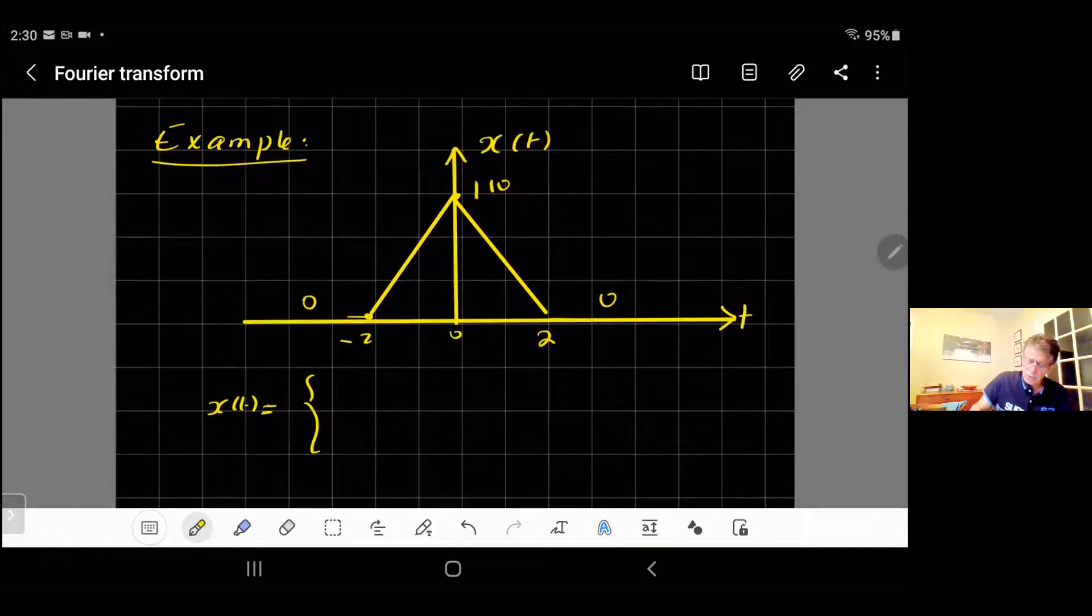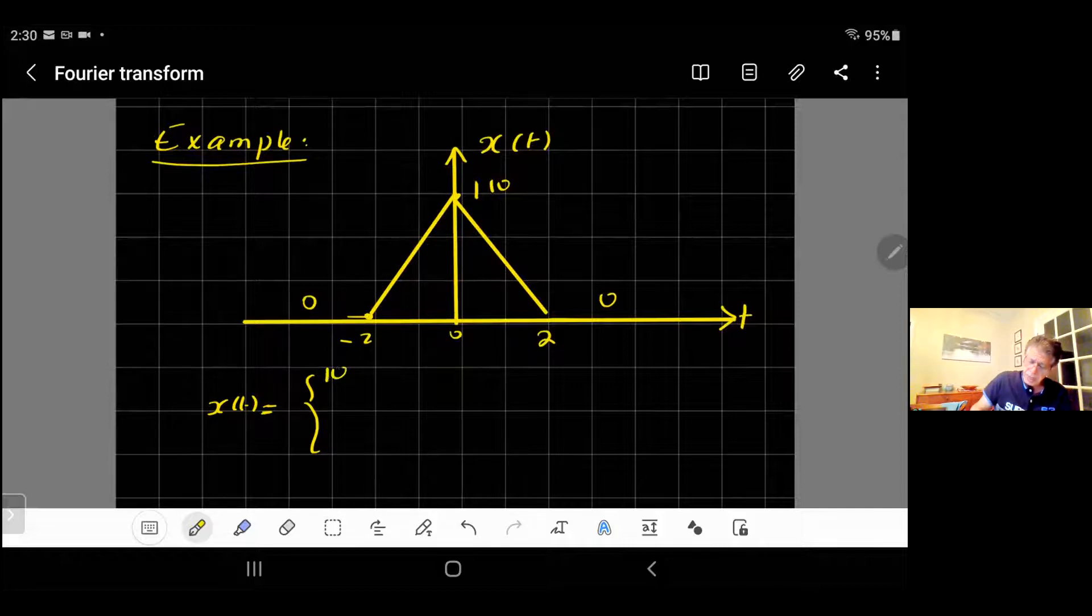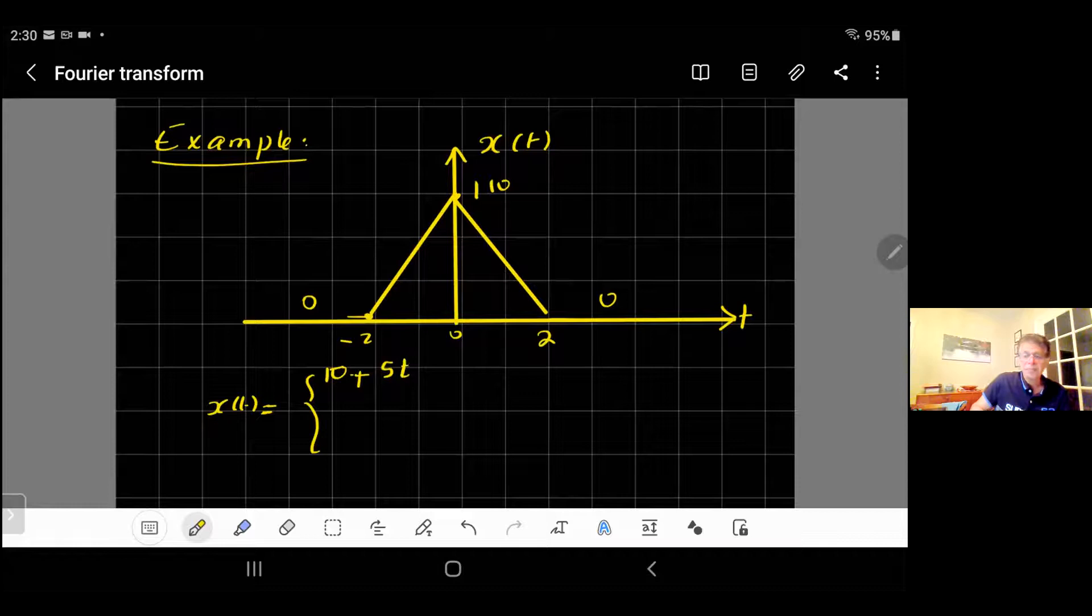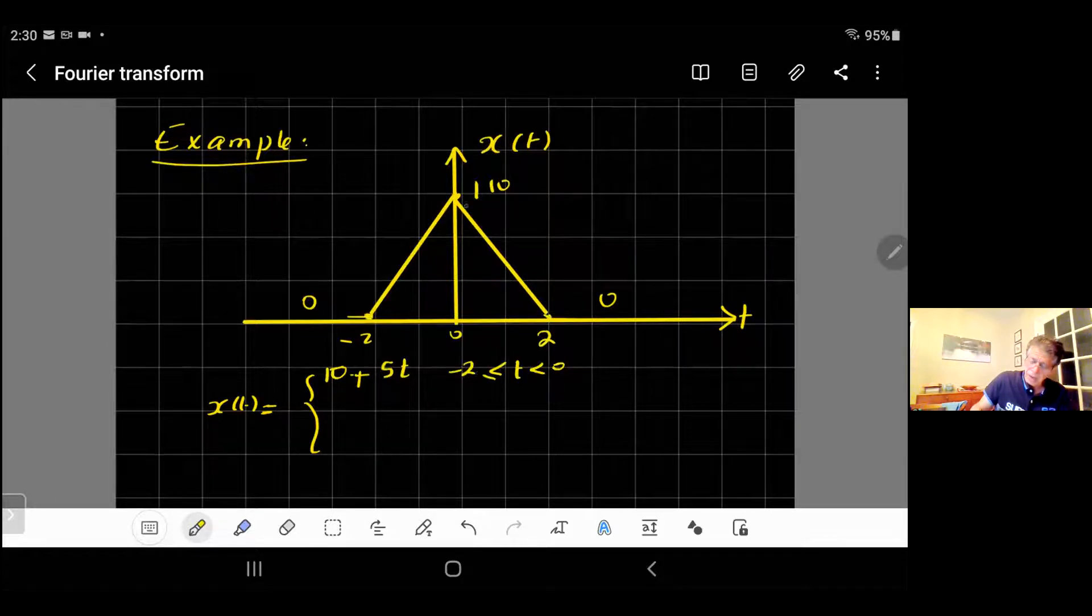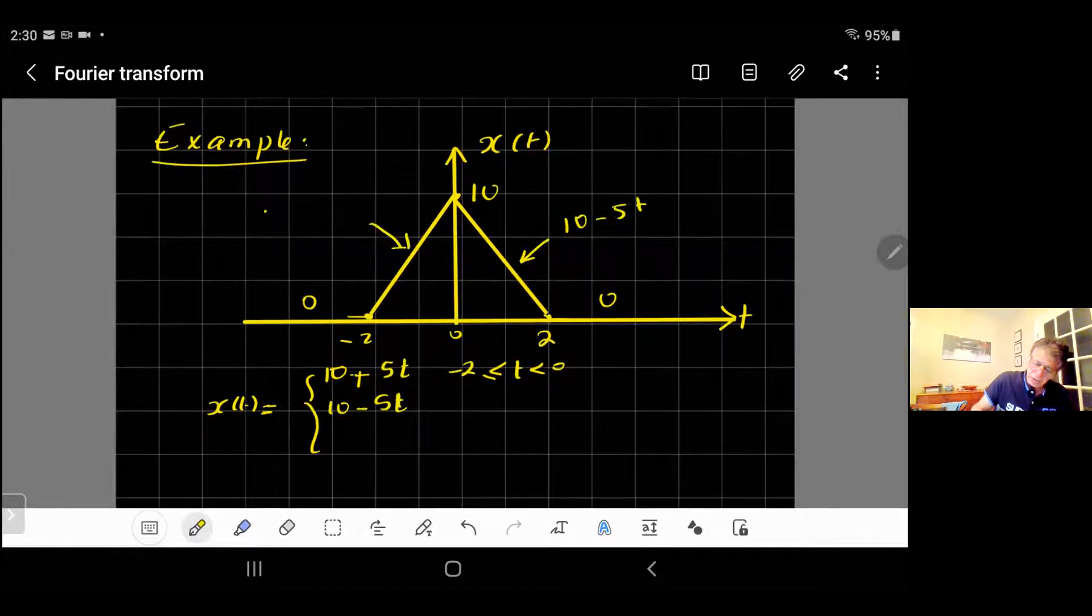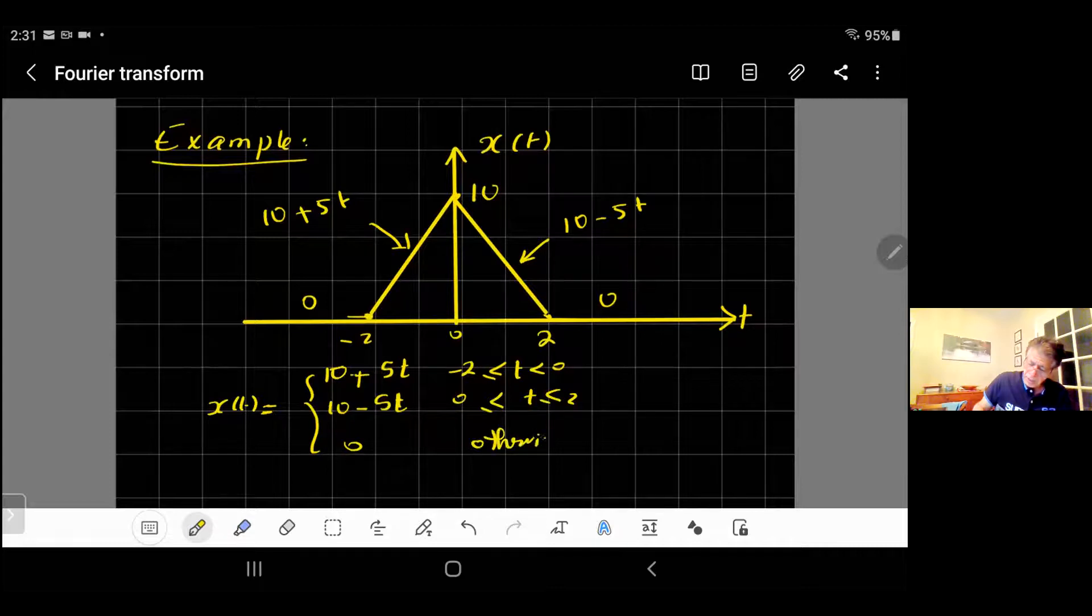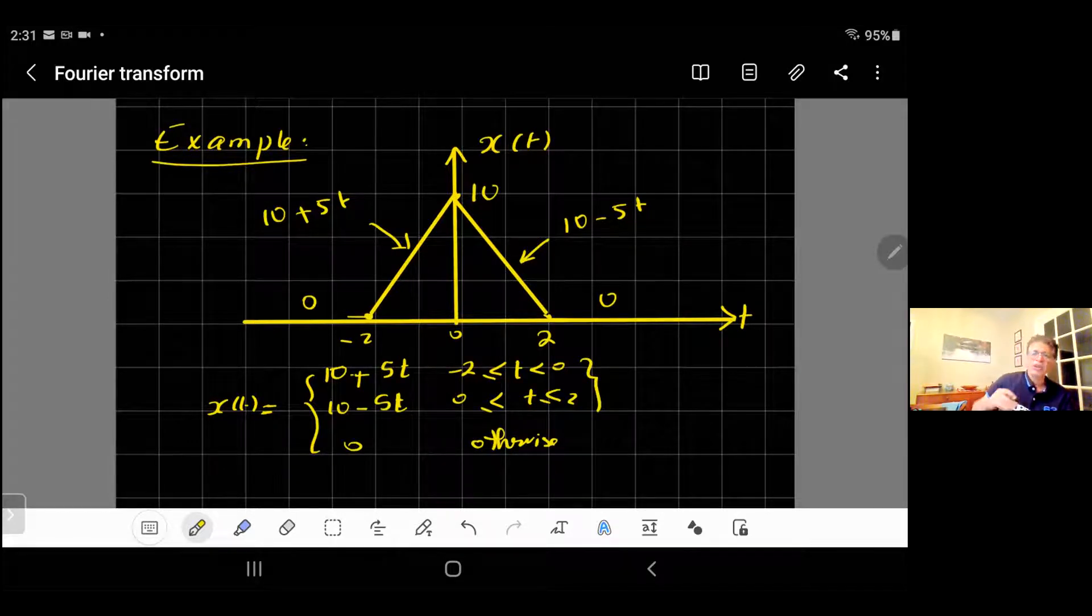I would say that x(t) has three regions. There is one from minus 2 up to time 0, it's a straight line. The y-intercept is equal to 10 and the slope is equal to 10 over 2, which is 5. So it's 10 plus 5t, and that happens when t is between minus 2 and zero. There's another line here between zero and two. This is 10 minus 5t, the slope is negative of this straight line. Then zero otherwise.